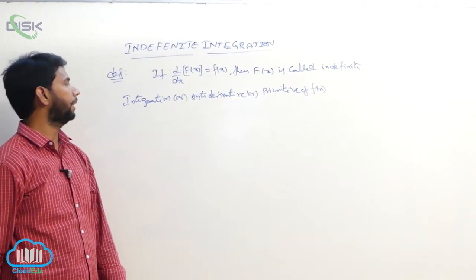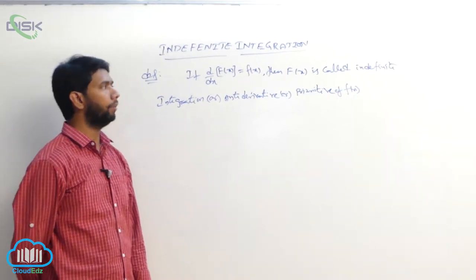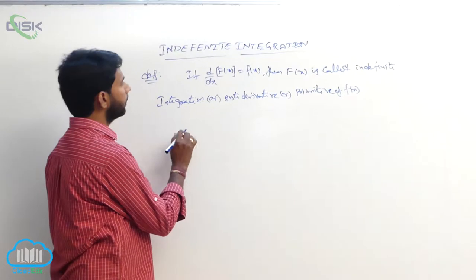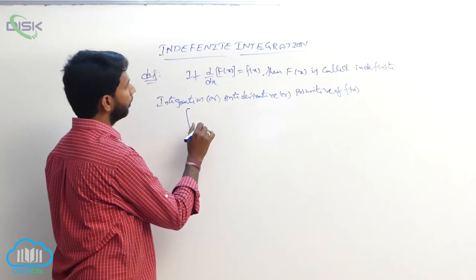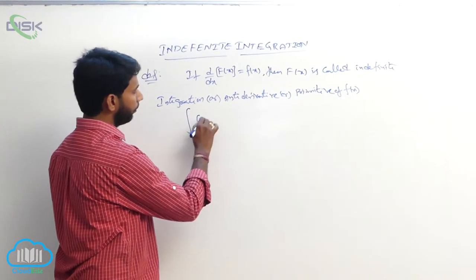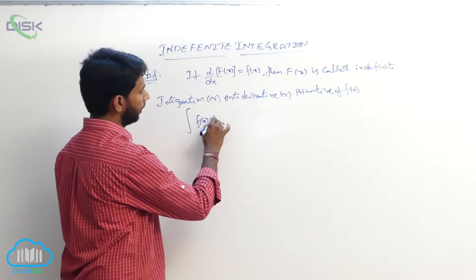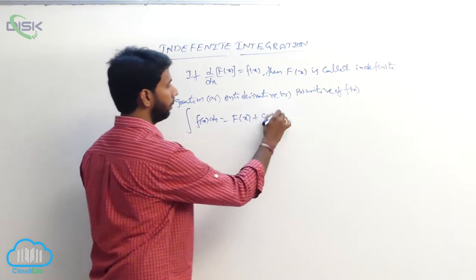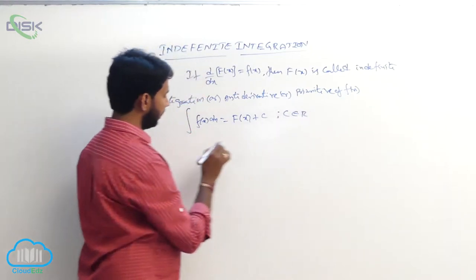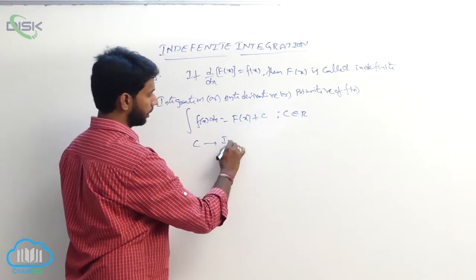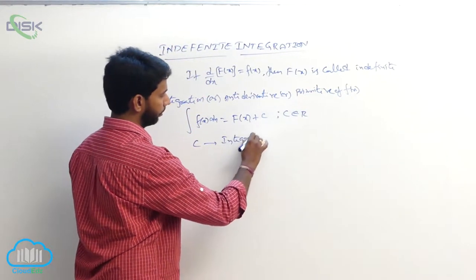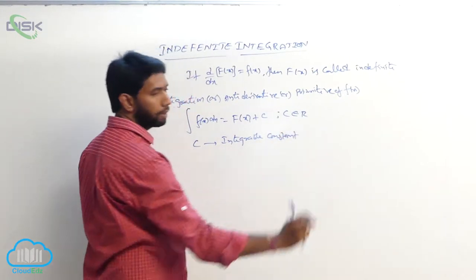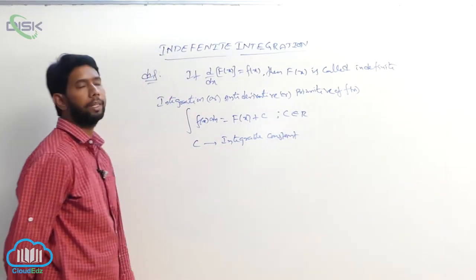If d/dx of capital F of x is equal to small f of x, then F of x is called the indefinite integration or anti-derivative or primitive, and is represented by the integral of f of x dx equals capital F of x plus some constant c, where c belongs to R and c is called the integrable constant.